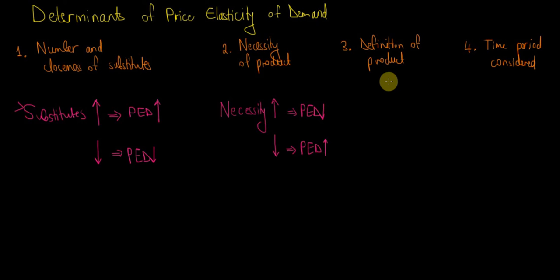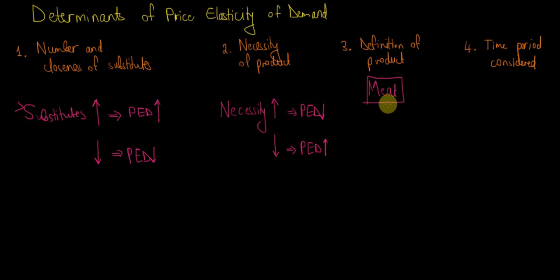The third determinant is the definition of the product — this is an ambiguous one that students often struggle with. How you define a product determines how elastic the demand is. For example, if you consider meat as a broad product category — which includes beef, pork, chicken, and lamb — even if meat becomes more expensive, most people still consume it daily. So the price elasticity of demand for meat as a broad category is relatively low.